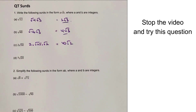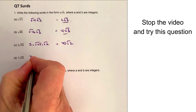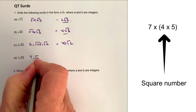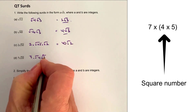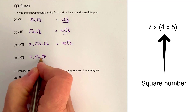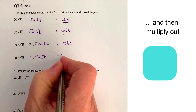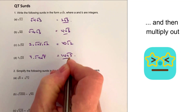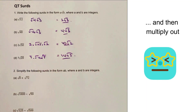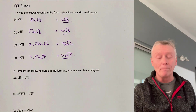For part D, we're going to leave the 7 out and it's going to be root 4 times root 5. The square root of 4 is 2. 7 times 2 is 14, so it'll be 14 root 5. And that would be the answers to question number 1.